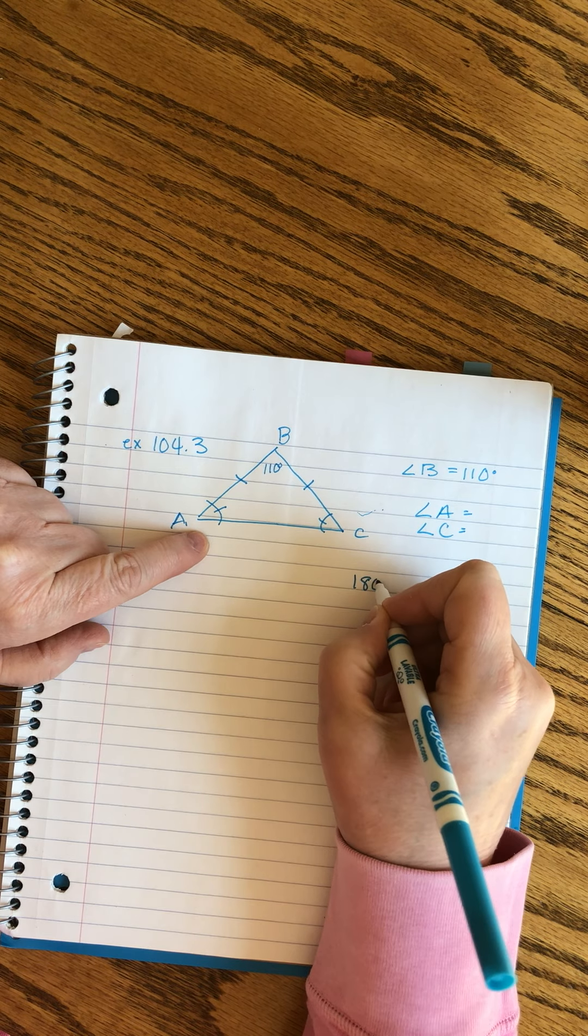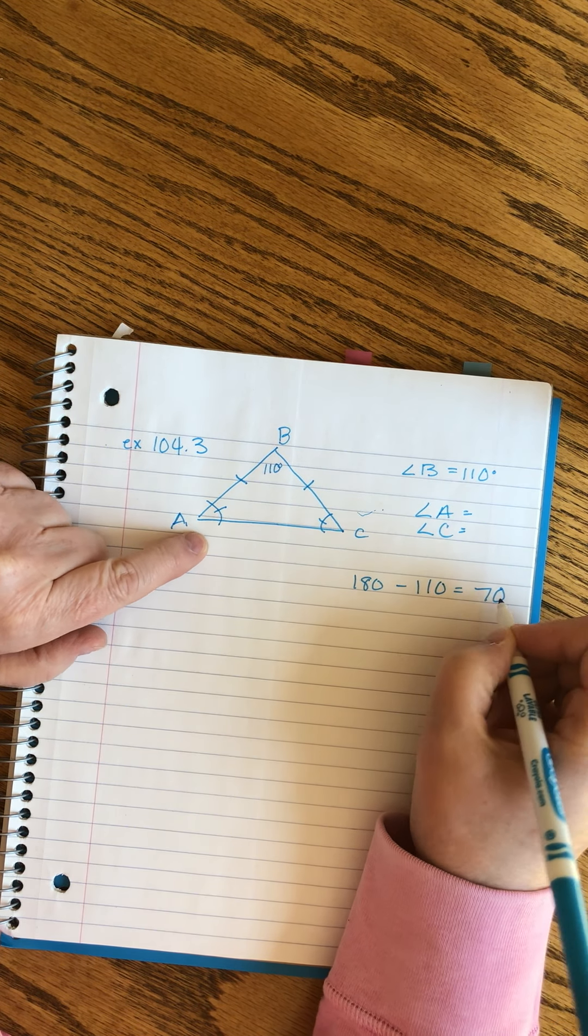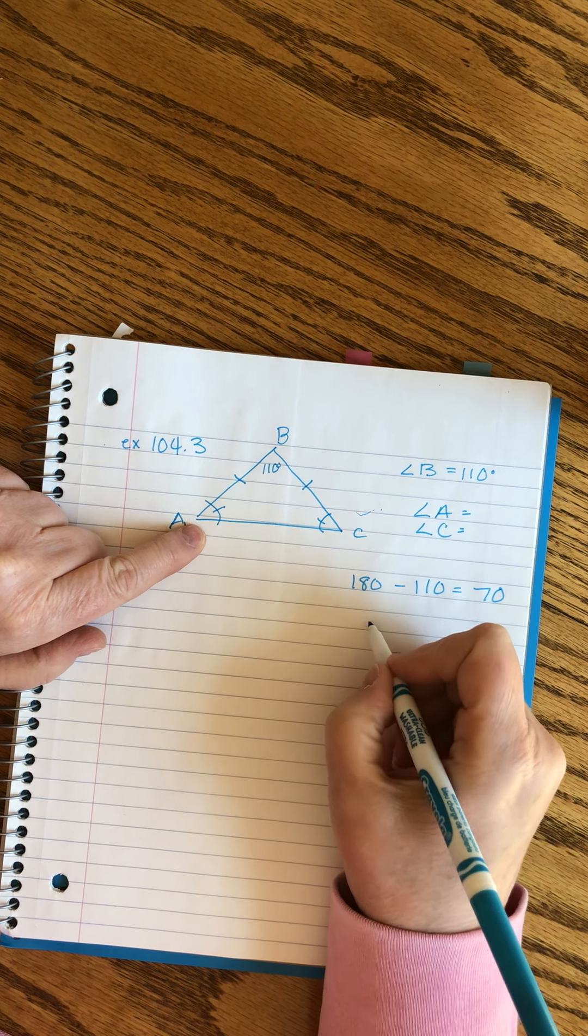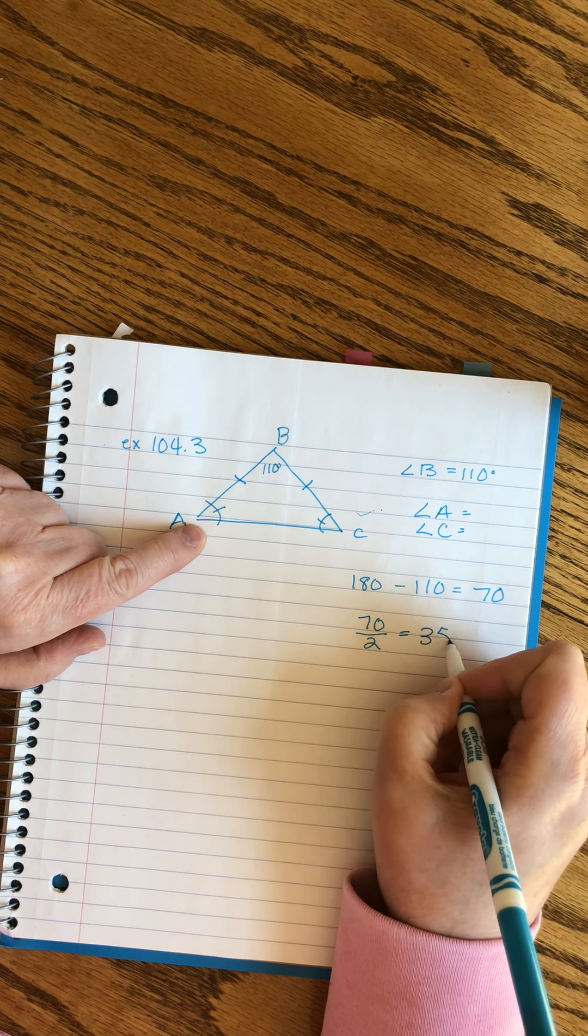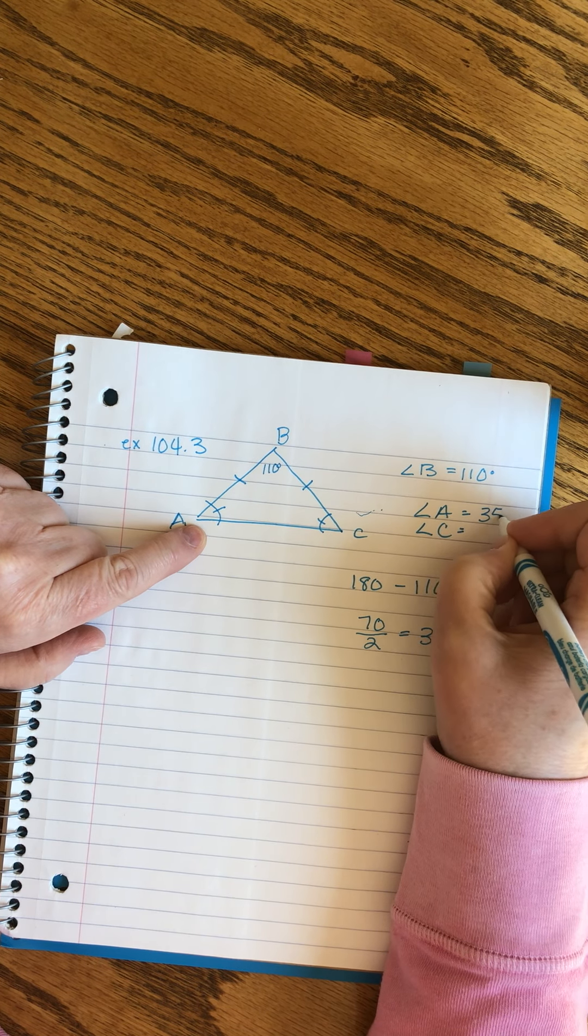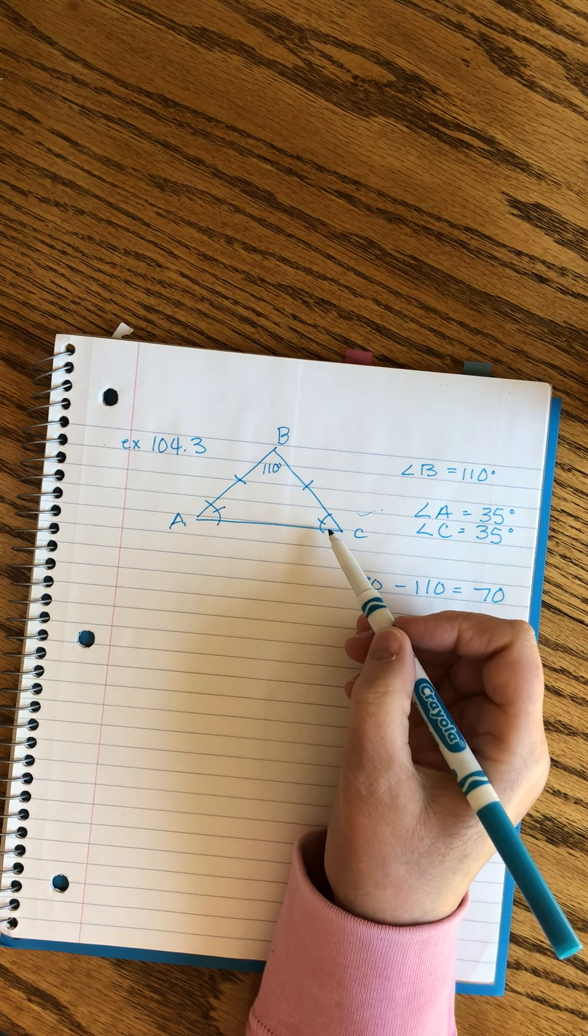A and C have to be the same size. So if we take 180 minus 110, that gives us 70. 70 has to be split evenly between A and C, so 70 divided by 2 equals 35. That tells us that both of these must be 35-degree angles. That way they'll be the same and together with angle B they'll add up to 180.